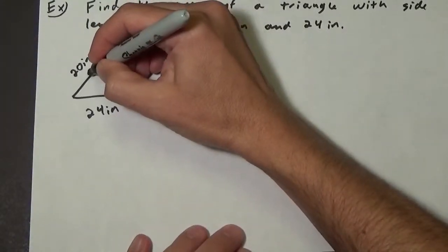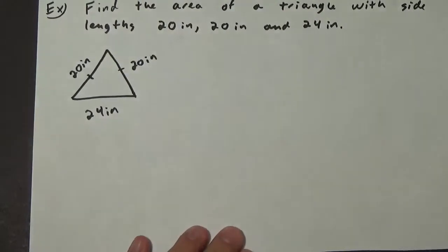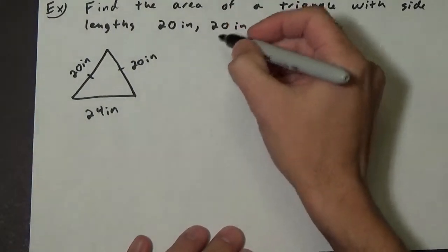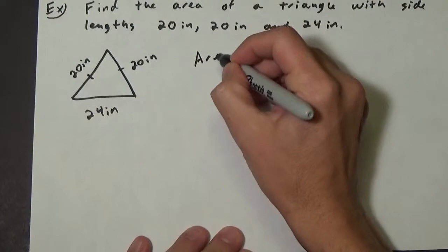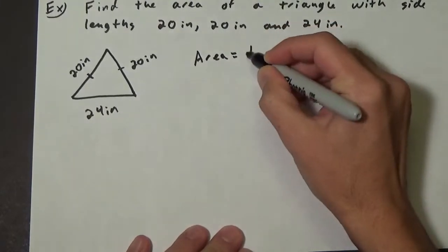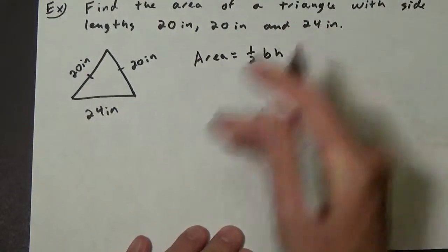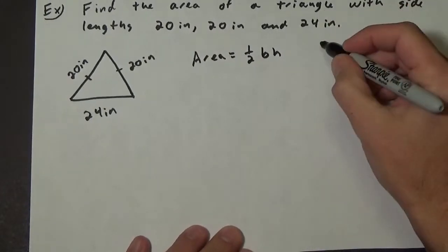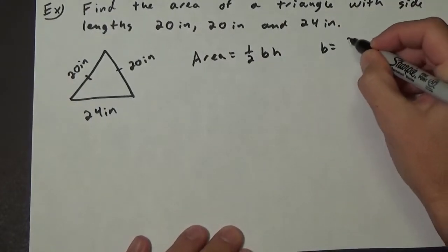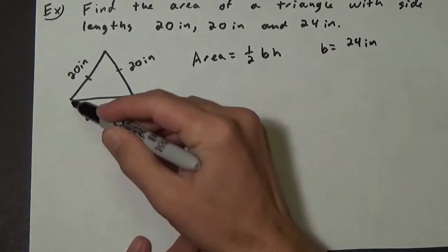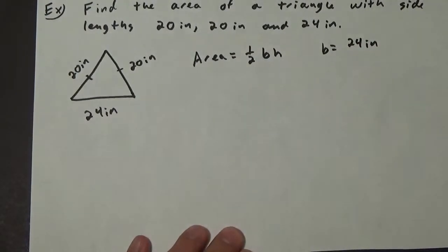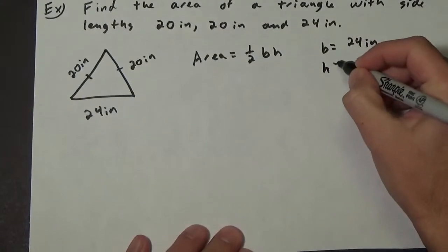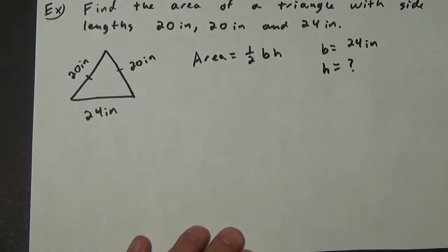this is an isosceles triangle. The area of a triangle in general is one-half the base times the height. The base is easy enough—that's 24 inches—but what about this height? We need to find this height